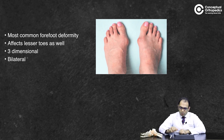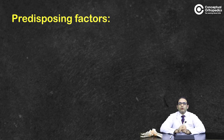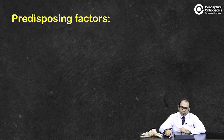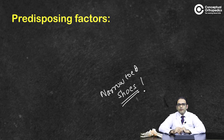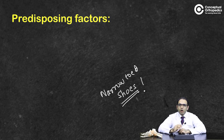What predisposes a person to hallux valgus? There are intrinsic factors and certain extrinsic factors. The only extrinsic factor — which is definitely modifiable — is wearing narrow-toed shoes. There is enough evidence that wearing a shoe with a narrow toe box makes someone more prone to hallux valgus. Unfortunately, this is the most common format of designer shoes that ladies wear.